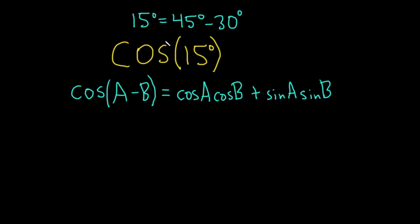Okay, so let's go ahead and apply it to our problem here. So we have the cosine of 15. That's the same thing as the cosine of 45 degrees minus 30 degrees.